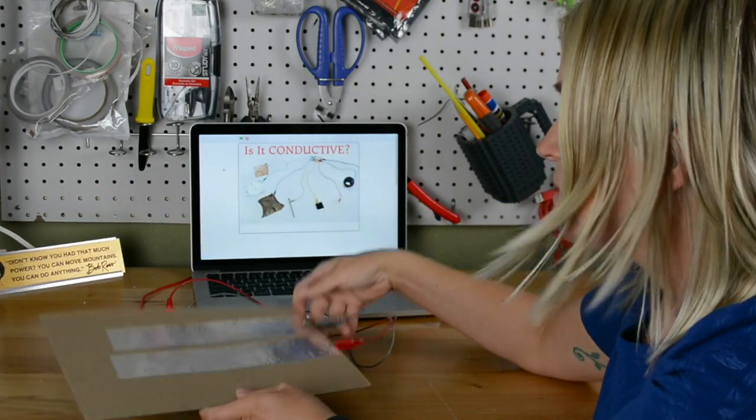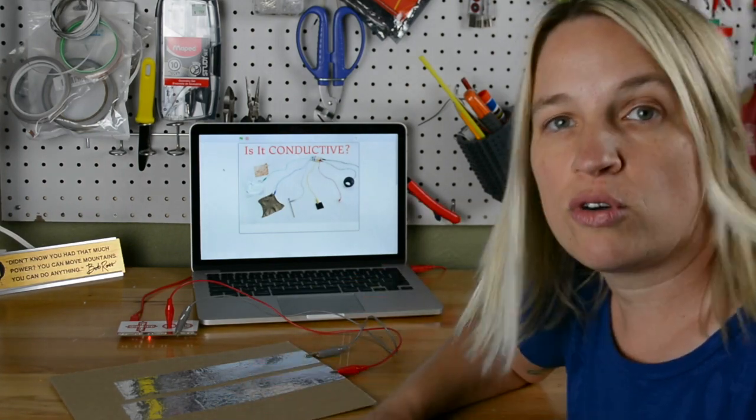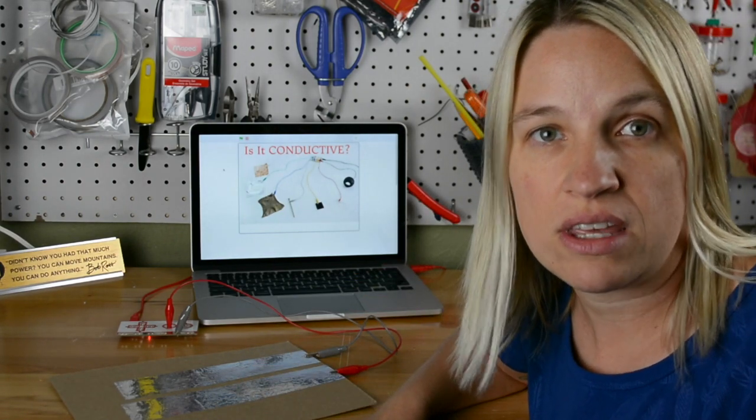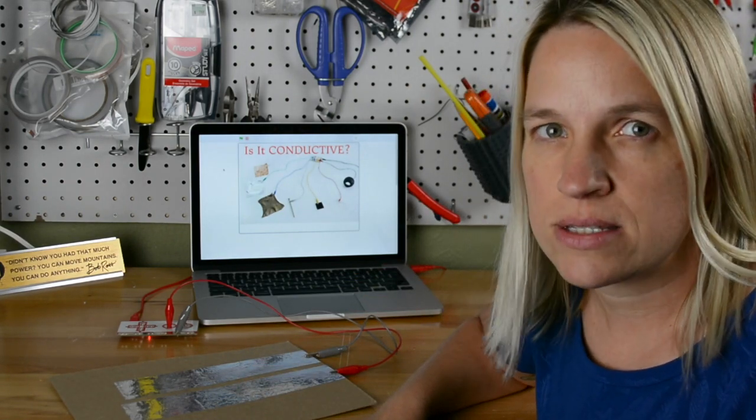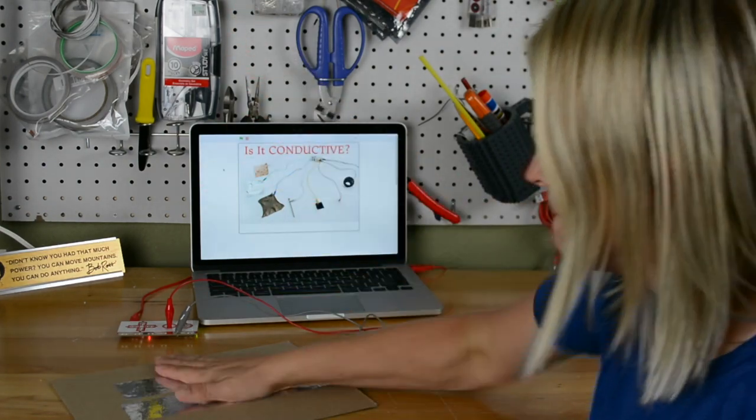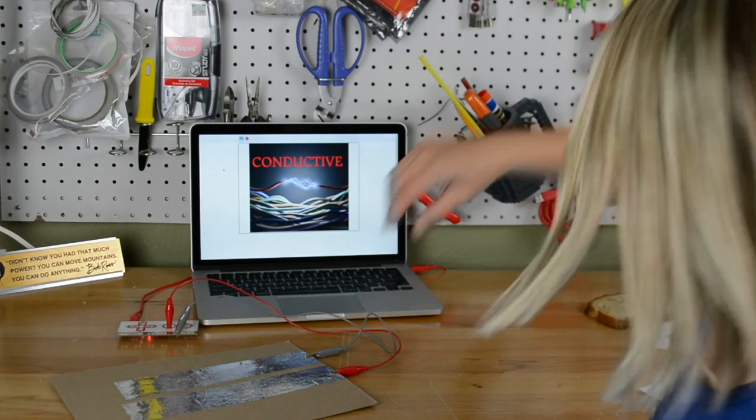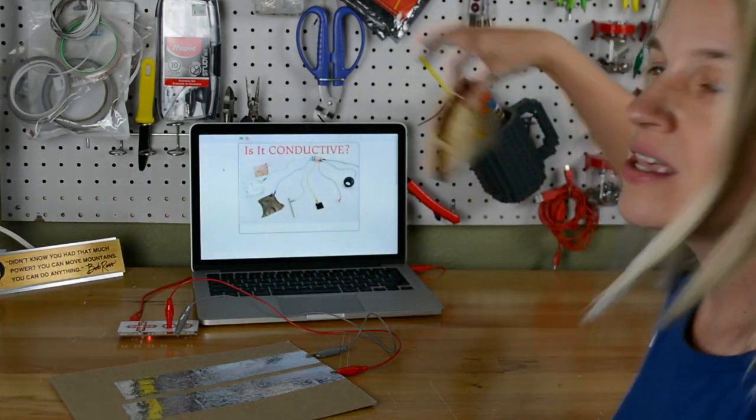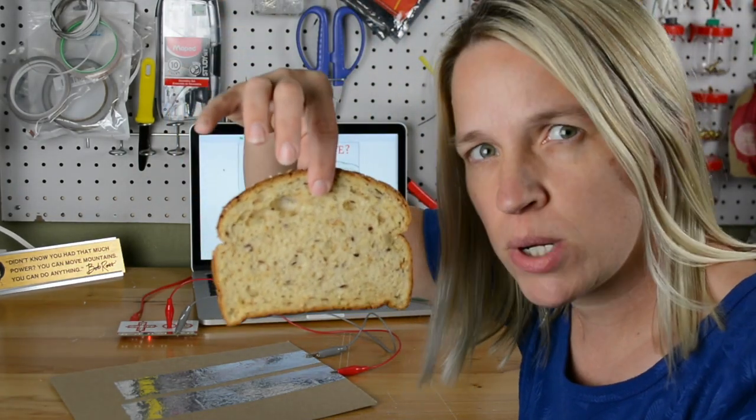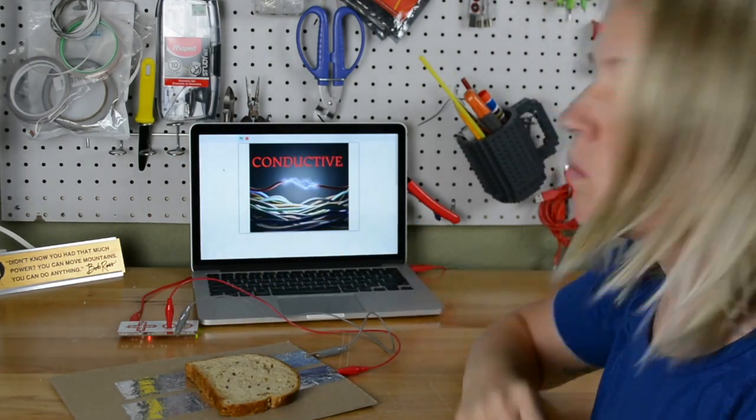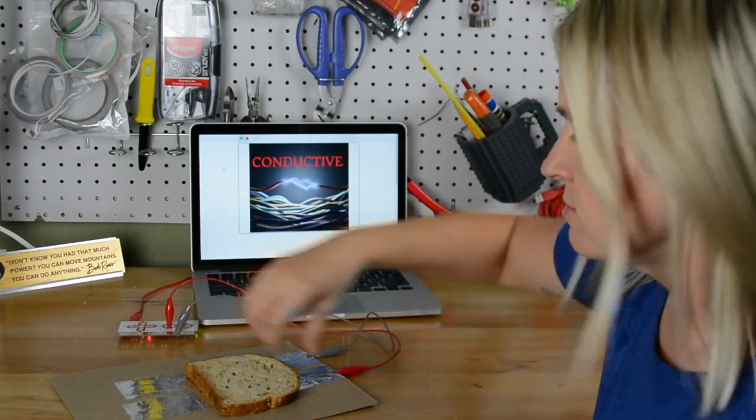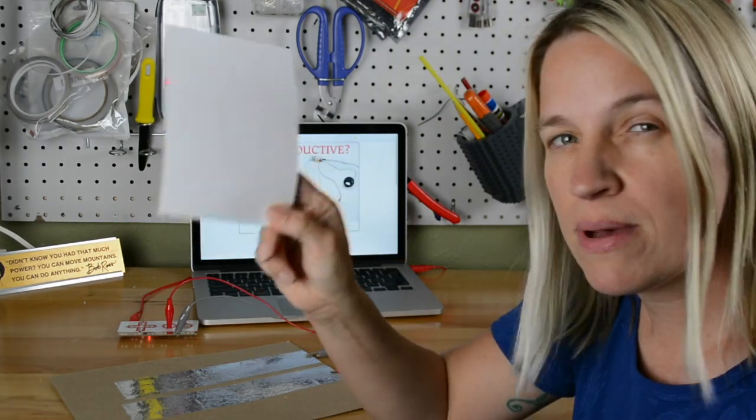Then we can check by laying something across—is that thing conductive? So let's test: am I conductive? How about this piece of bread, is this bread conductive?